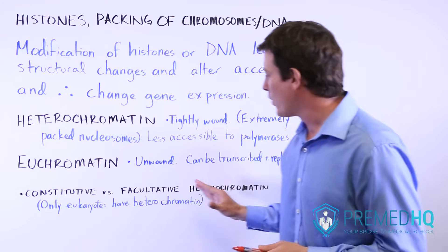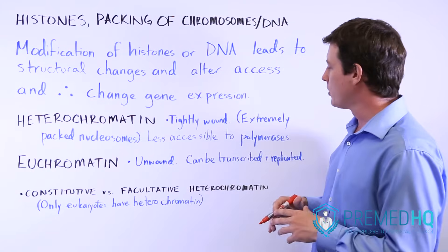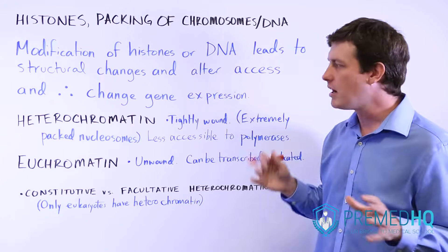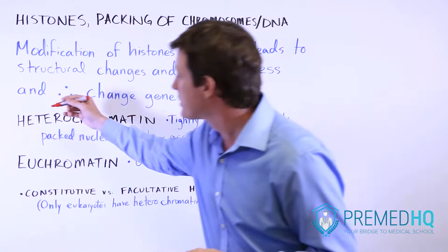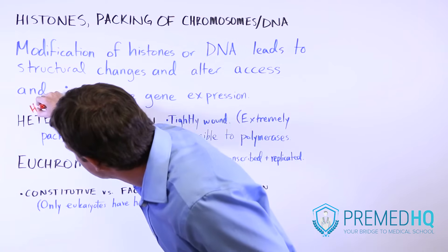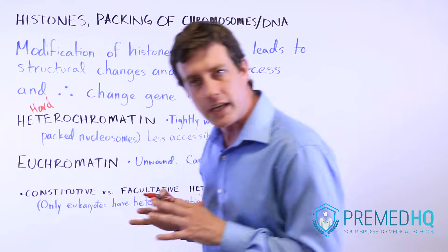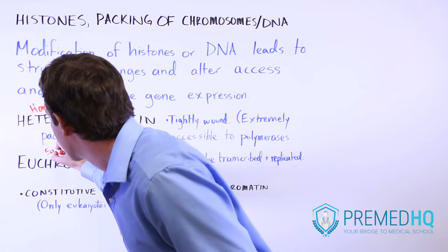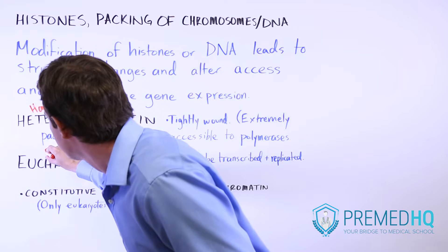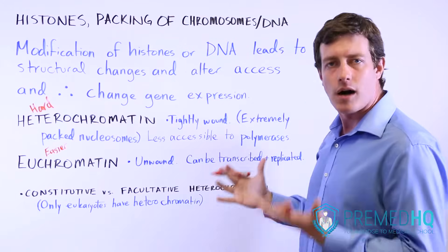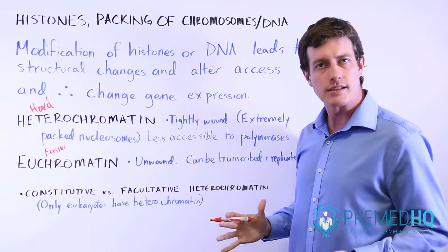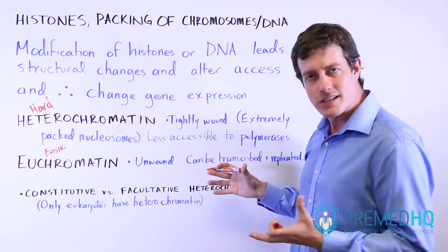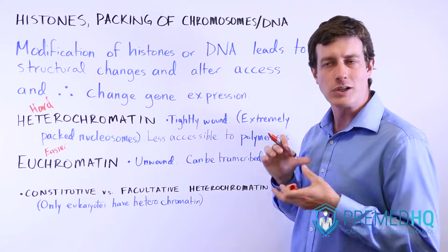Euchromatin is the unwound form, and this form can be transcribed and replicated. A helpful mnemonic: heterochromatin, which starts with an H, is very hard to replicate and very hard to transcribe, whereas euchromatin is much easier. Notice that this is only a problem that exists with eukaryotic cells, because those are the only ones with the membrane-bound nucleus and the histones that allow for this packing or coiling.